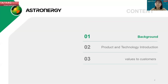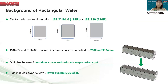My topic today is the values of rectangular wafer for tropical modules. I'm going to have three sections. In the first section, I'll briefly introduce the background of the rectangular wafer and the top manufacturers' choices. It seems like a stereotype thinking that silicon wafers need to be square-shaped, and this may limit some very good designs.